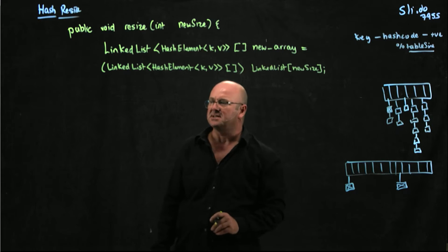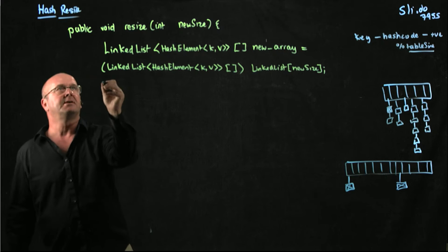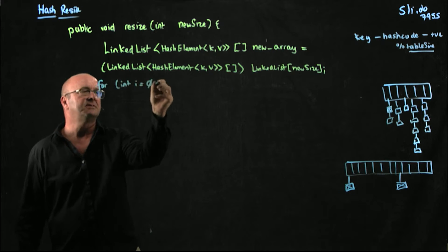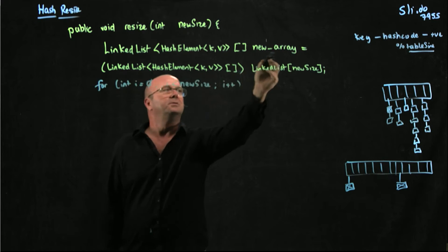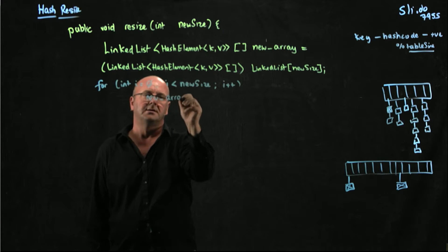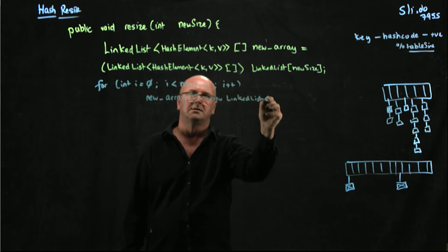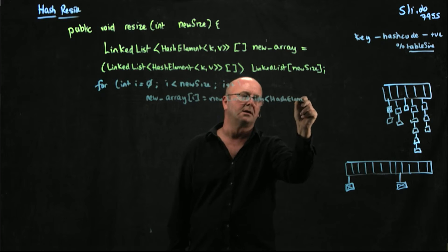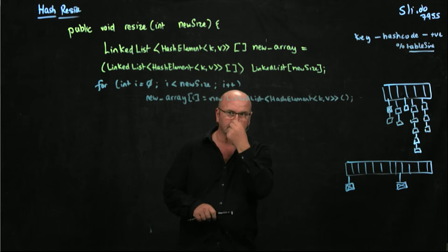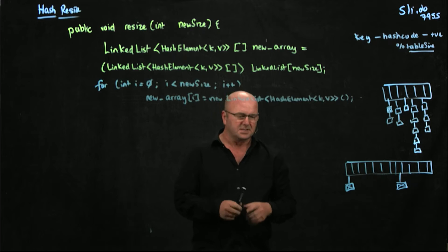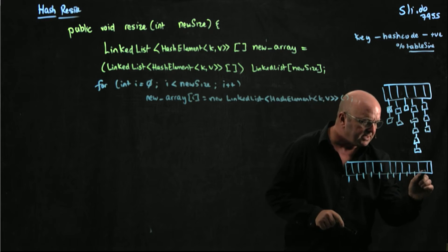This new size is this new size that's going to be our array that's going to basically be double the size of our existing table size usually. Then we're going to do exactly what we did in the constructor. We're going to take our array and we're going to initiate linked lists at every position in the array. So for int i equals zero, i is less than new size, i plus plus, new array i is new linked list hash element KV. So now we've got our linked lists and we've populated our new array.